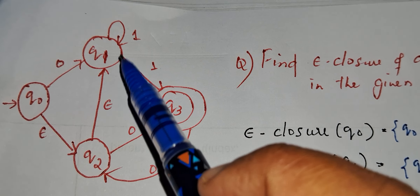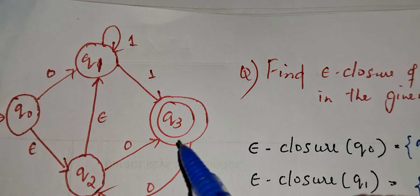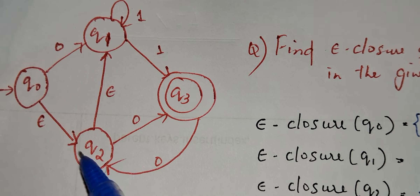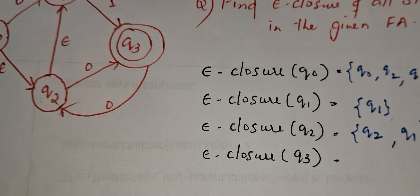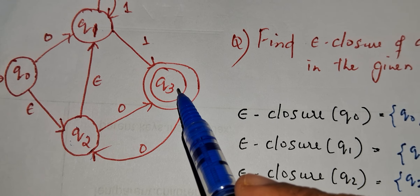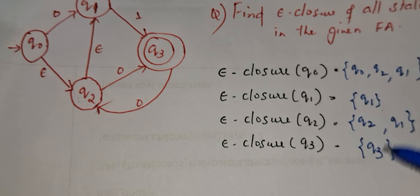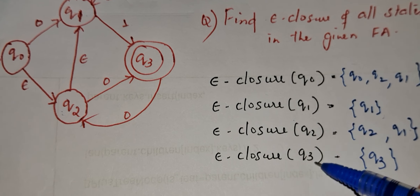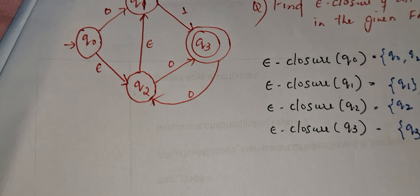E-closure of q2: q2 itself, then from q2 there is an epsilon movement to q1, so e-closure of q2 is {q2, q1}. E-closure of q3: q3 itself, and there is no epsilon outgoing edge from q3, so e-closure of q3 is {q3}. In summary: e-closure(q0) = {q0, q2, q1}, e-closure(q1) = {q1}, e-closure(q2) = {q2, q1}, e-closure(q3) = {q3}. In the next topic, I will explain how to convert epsilon NFA to NFA.